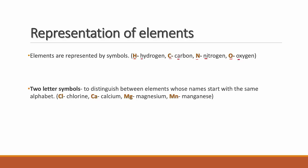We also have two-letter symbols. When you have two friends whose names start with the same alphabet, you can't call both of them by the same letter — you need two individual nicknames. Similarly, when two elements start with the same alphabet, like C for chlorine and calcium, we can't represent both as C, so we use two-letter symbols.